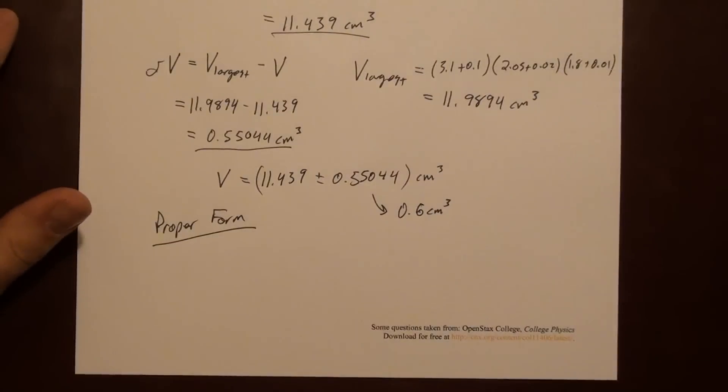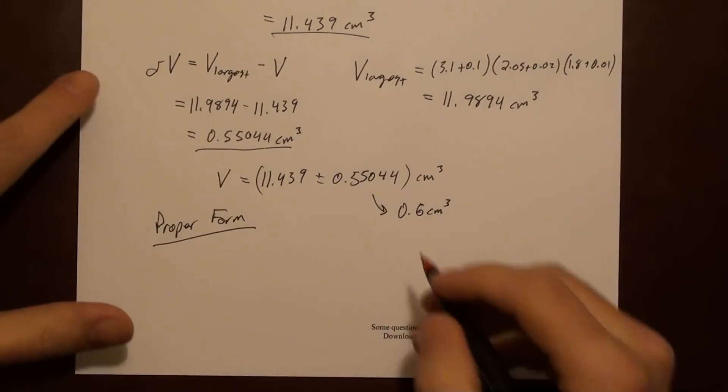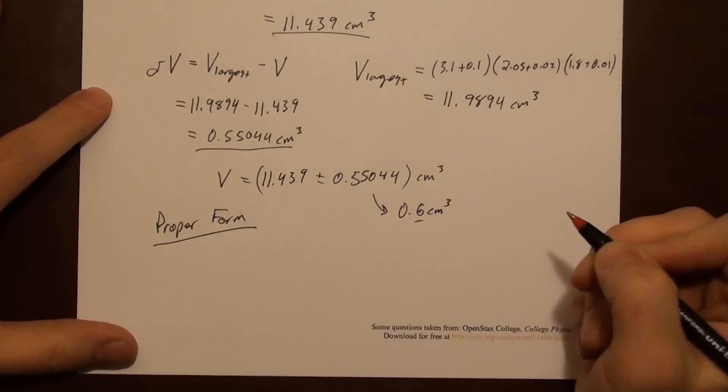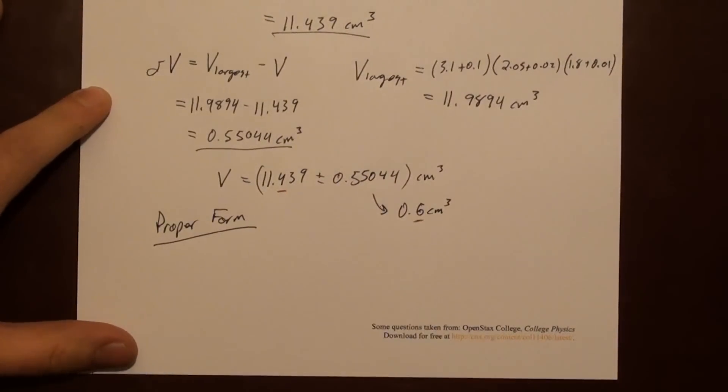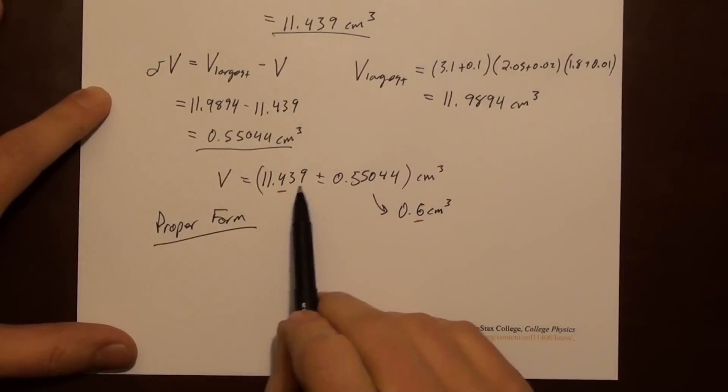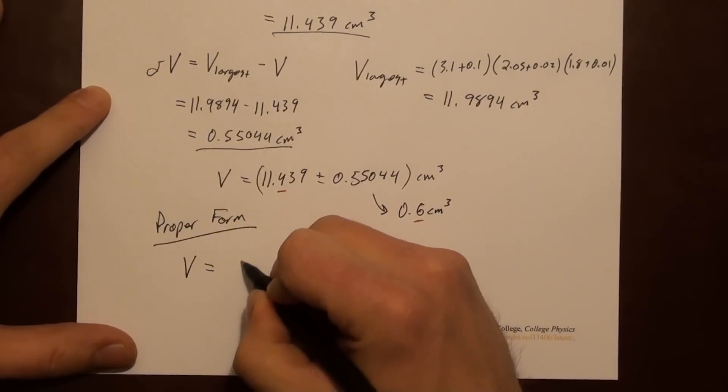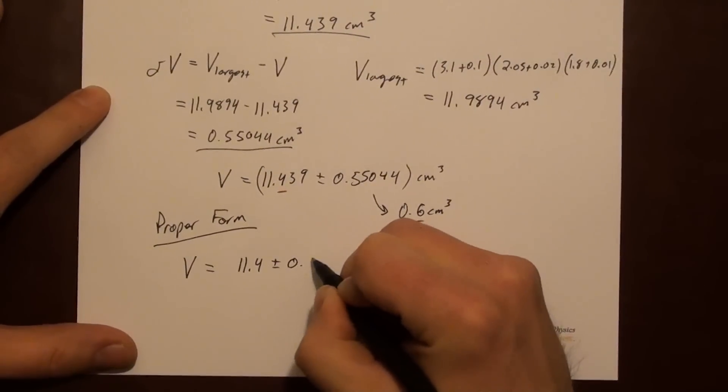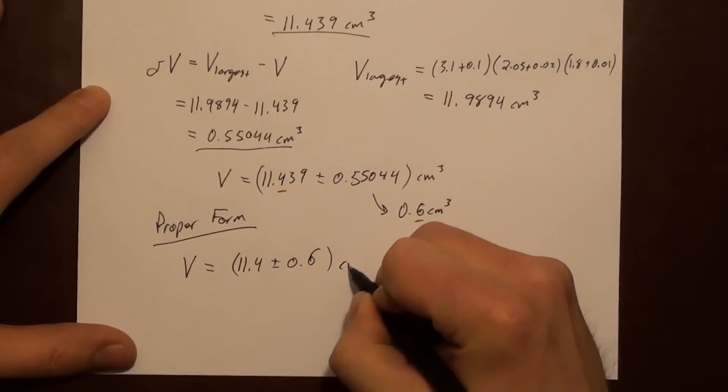And now we use the error to guide our rounding of the answer. The error is in the tenths place, so we're going to round our answer to the tenths place. So it looks like we're going to round this 0.439 down to just a 0.4. So in proper form, our volume is 11.4 ± 0.6 cubic centimeters.